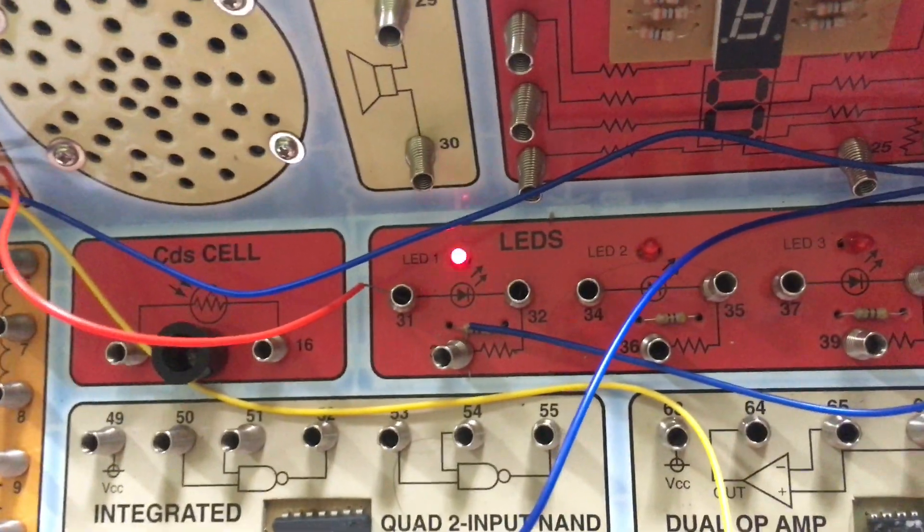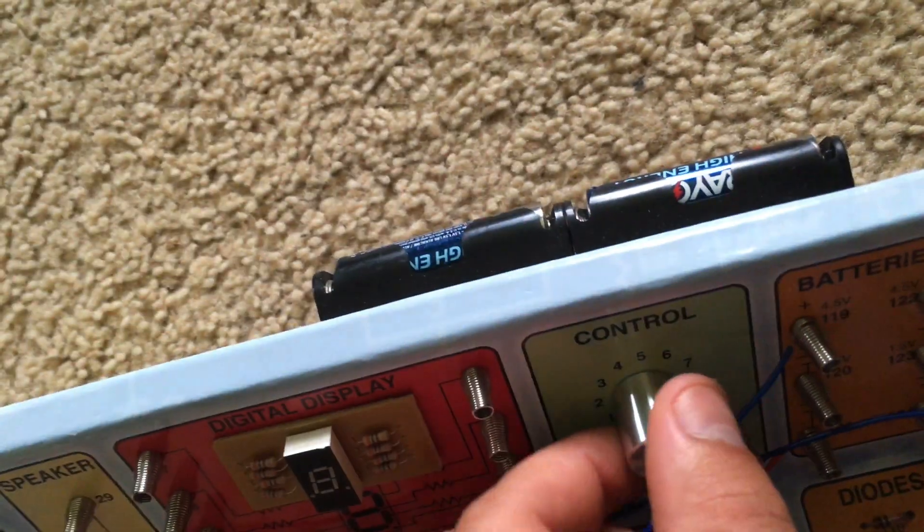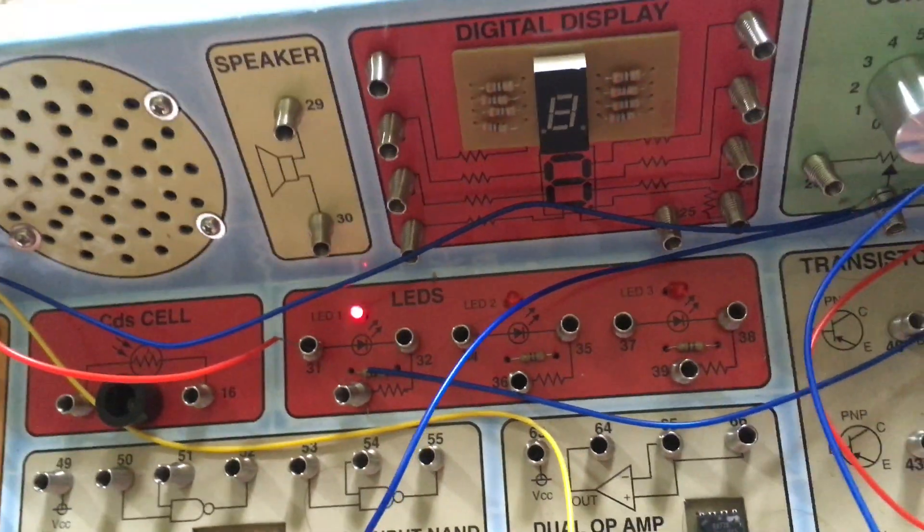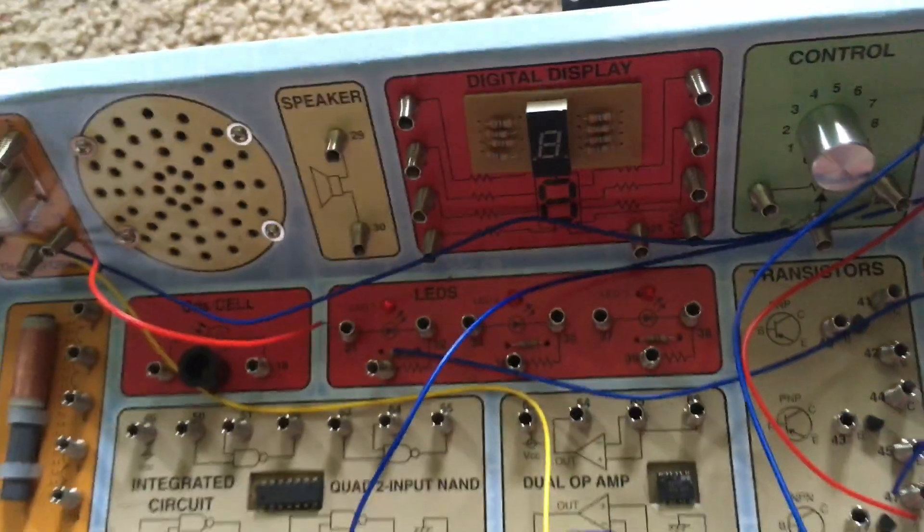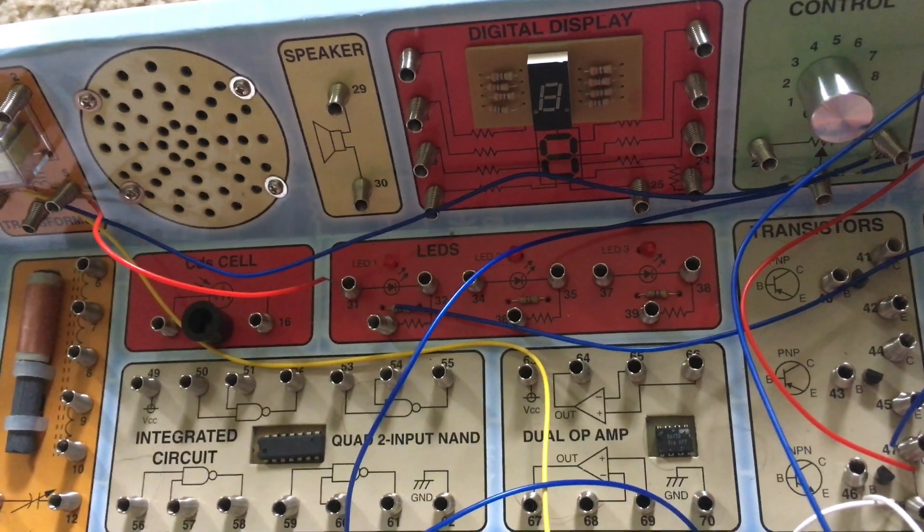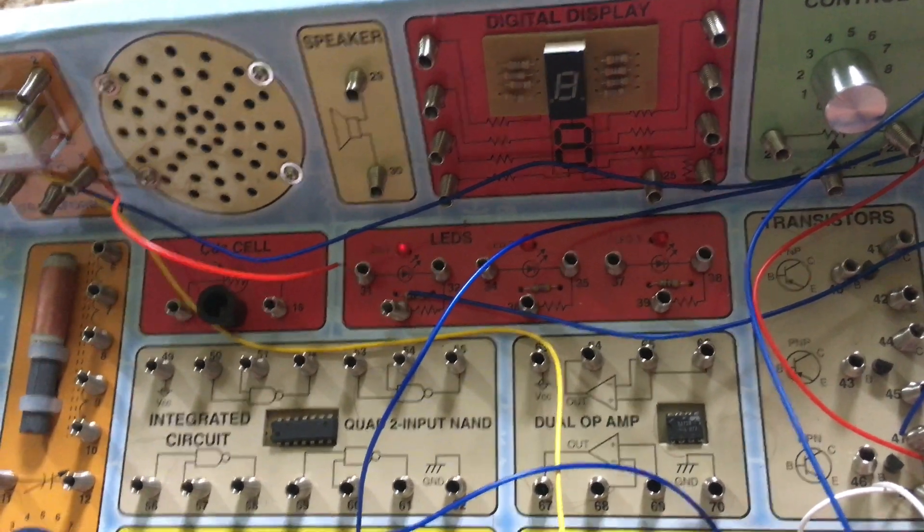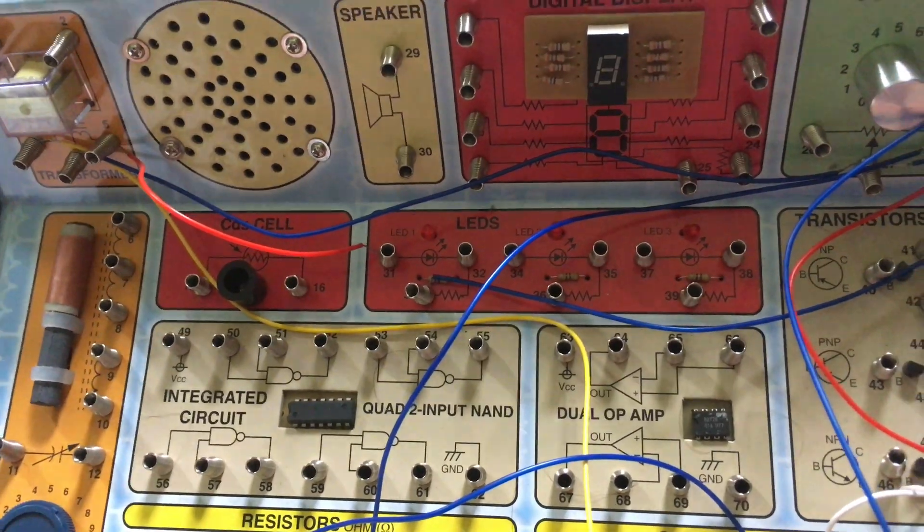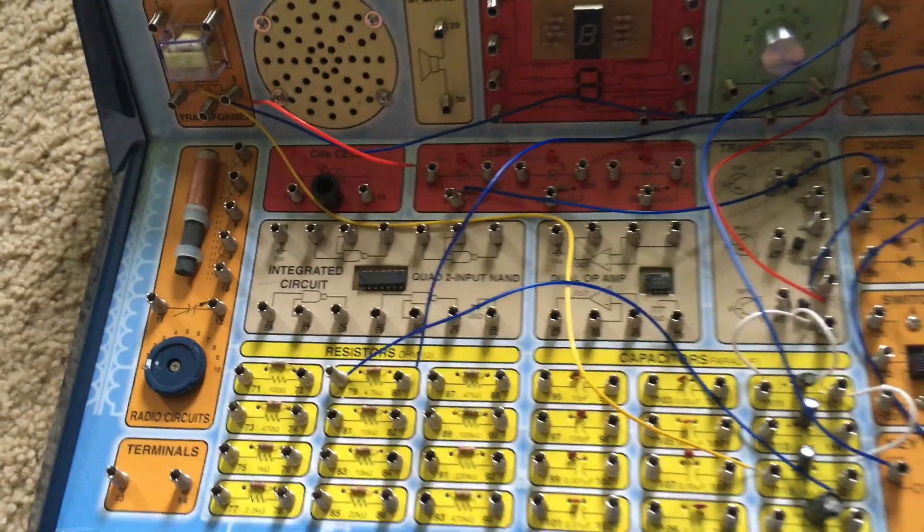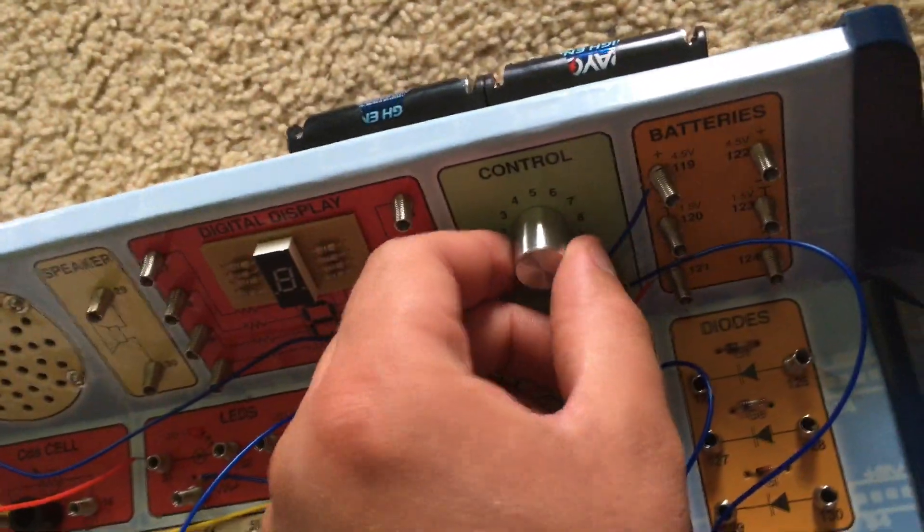It's going to flash. The control knob is used to adjust the rate at which the LED flashes. And every time the LED flashes, that's a hertz. So you can adjust how many hertz this circuit is.